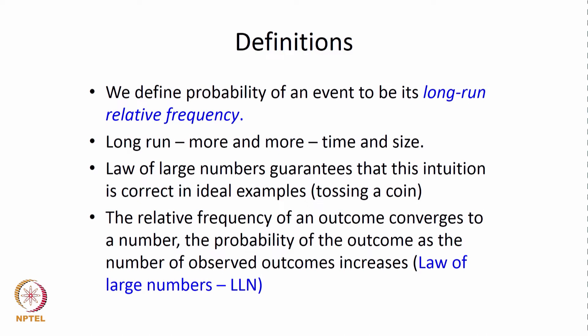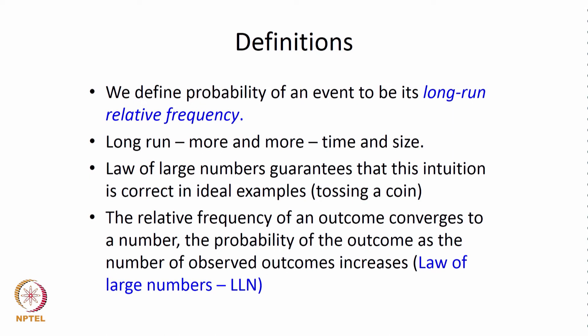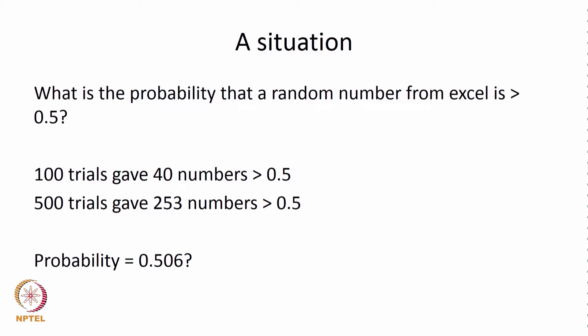Many times in our discussions and computations we use proportions as probabilities. For example, the Indian captain won the toss in 7 out of 19 matches, so the proportion of India winning the toss is 36.8 percent. In most discussions we would even say the probability is 0.368 or 38 percent. So proportions become probabilities under the assumption of the law of large numbers. Whenever we substitute a proportion for a probability, we have to assume that the number of trials is sufficiently large to make that generalization.